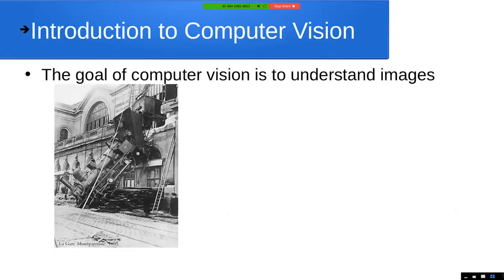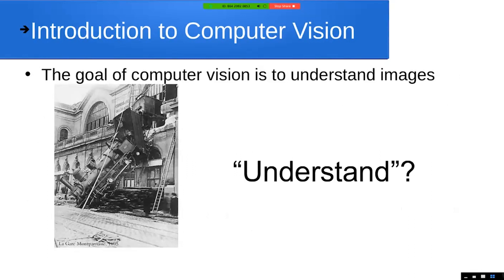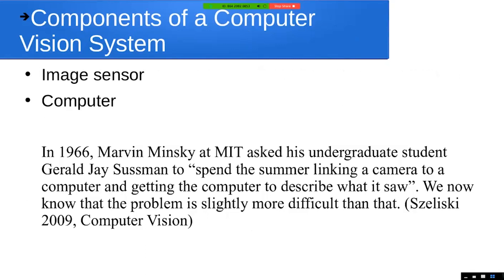The goal of computer vision is to understand images. It goes back to 1966, when Marvin Minsky — a professor at MIT, really well-known in artificial intelligence — wrote a lot about neural networks and connectionist theories, different kinds of schools of AI.